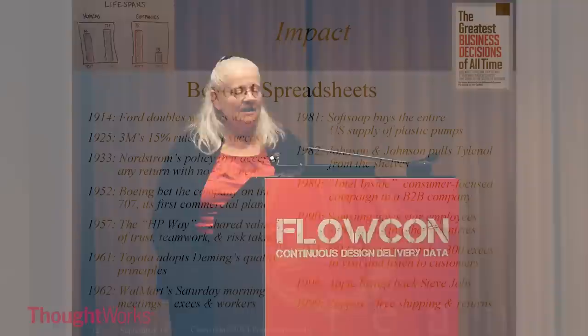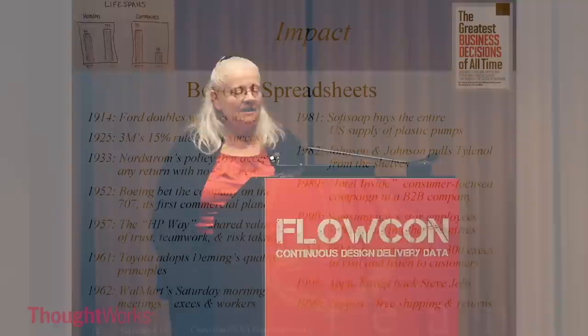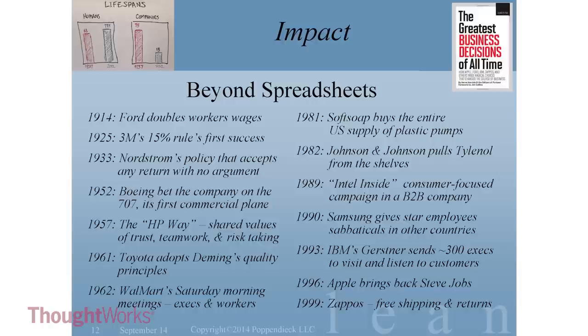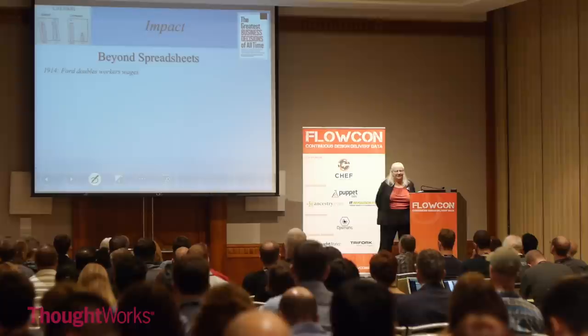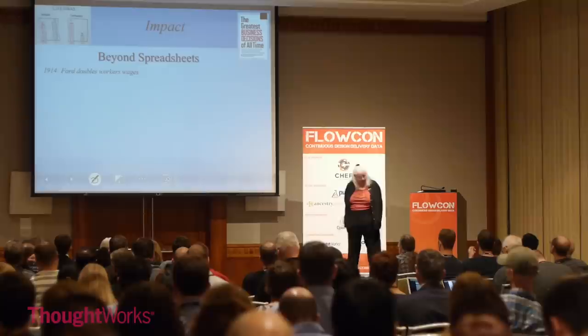Ford doubled workers' wages in 1914. Why? Because they couldn't retain people. Relative to other auto companies and all other employment, suddenly they were the only game in town — and that was the beginning of a really long road of success as they flooded the whole country with cars. Most newspapers said Ford was crazy, but he knew what he was doing: he was trying to create an environment where he had a stable workforce.